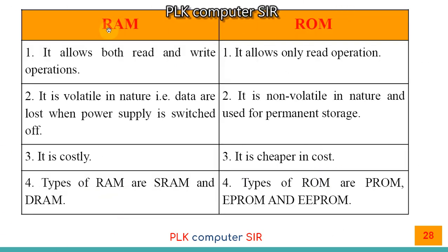Difference between RAM and ROM: RAM allows both read and write operations; ROM allows only read operations. RAM is volatile — data is lost when power supply is switched off. ROM is non-volatile and used for permanent storage; even when power is cut, ROM retains its data. RAM is costly; ROM is cheaper. Types of RAM are SRAM and DRAM. Types of ROM are PROM, EPROM, and EEPROM. Note for students: many write SRAM and DRAM as examples of RAM — remember, these are types, not examples.